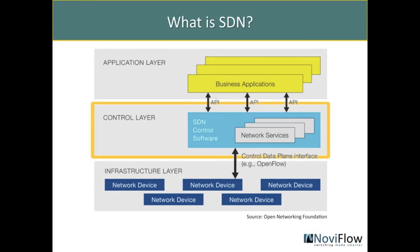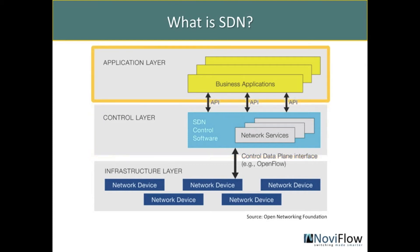In the middle is the control layer, which provides an end-to-end view or abstraction of the network to the application layer. The control layer is realized in a controller, which may communicate with hundreds or thousands of network devices, and which provides an application programming interface northbound towards the application layer. At the top is the application layer, where applications define the behavior of the infrastructure layer through interacting with the controller's northbound API.